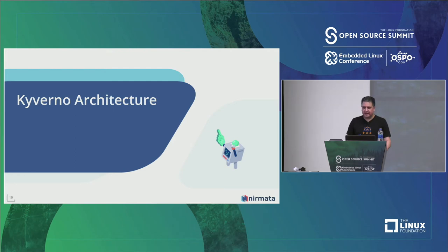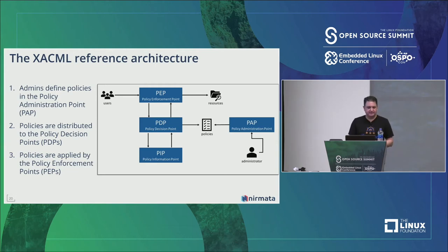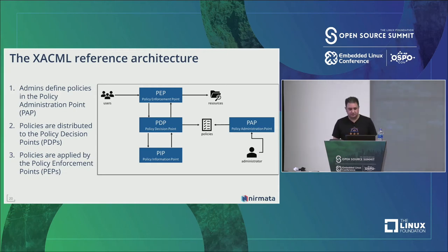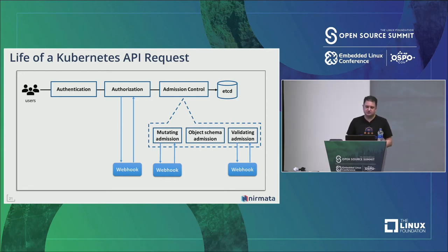Let's talk about the Kyverno architecture. The reference architecture for policy management from the XACML standard introduces terms like the Policy Administration Point (PAP), Policy Enforcement Point, decision points, and information points. Mapping this to Kubernetes: every request flows through the API server through authentication, authorization, and then extensible admission controls, where you have a chance to mutate, validate, and generate resources — which is where Kyverno fits in.